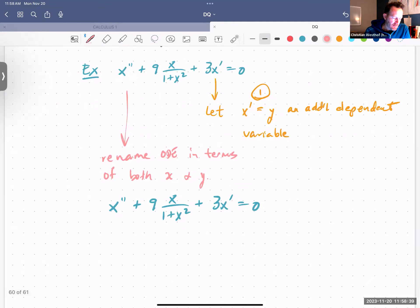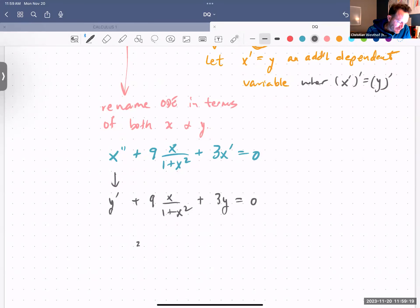Instead of x double prime, that's going to be y prime. And just as a note, if we have x prime equals y, if we took the derivative then we'd get the derivative of y, which is y prime. So x double prime is y prime. So this becomes y prime plus nine x over one plus x squared plus three y is equal to zero. And now for our second equation, we get y prime is equal to negative three y minus nine x over one plus x squared.